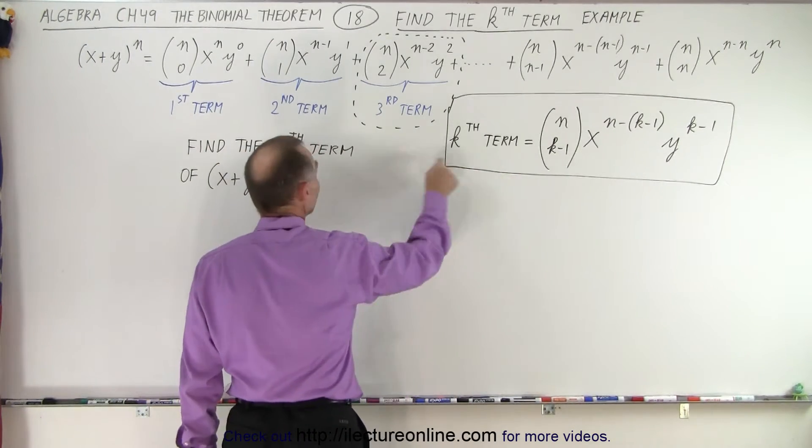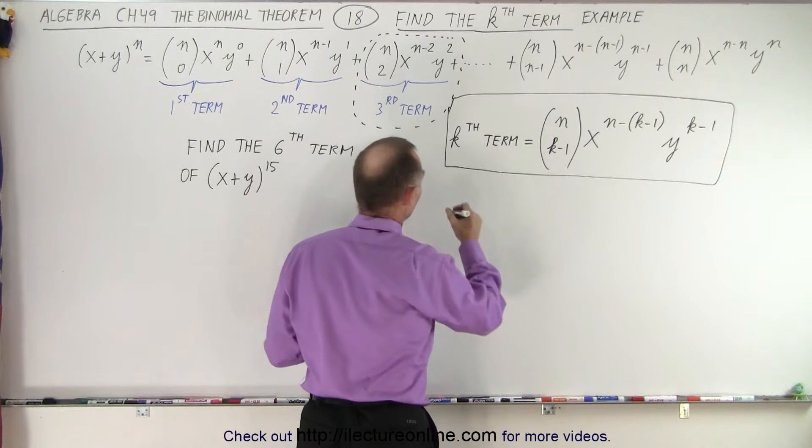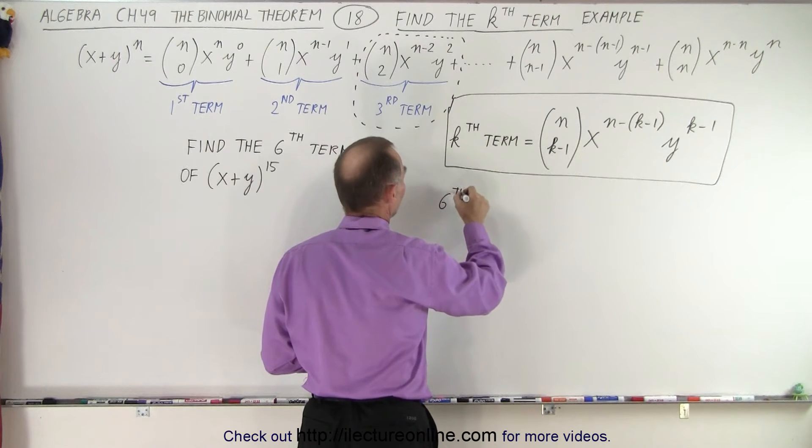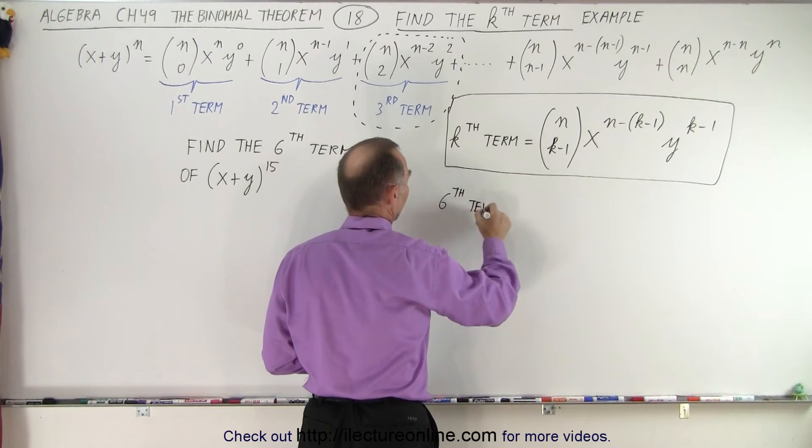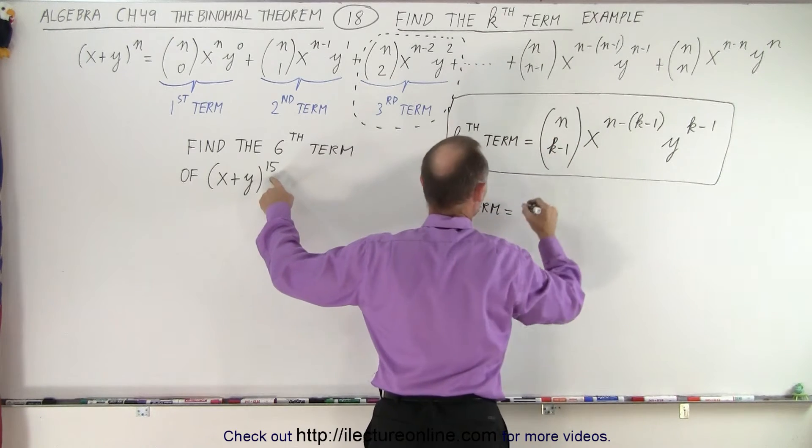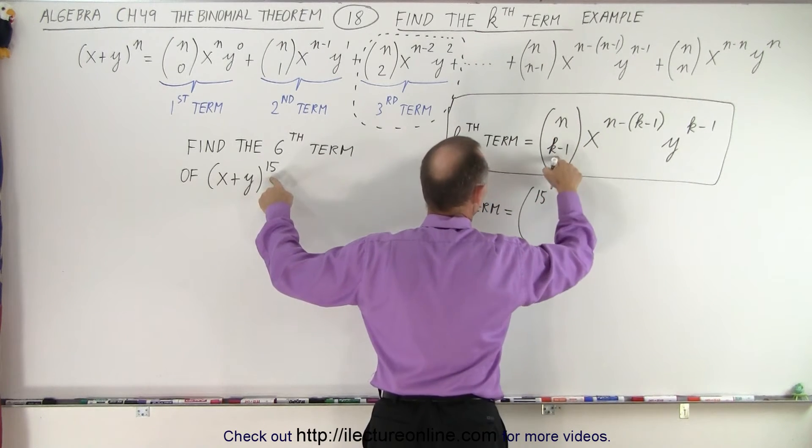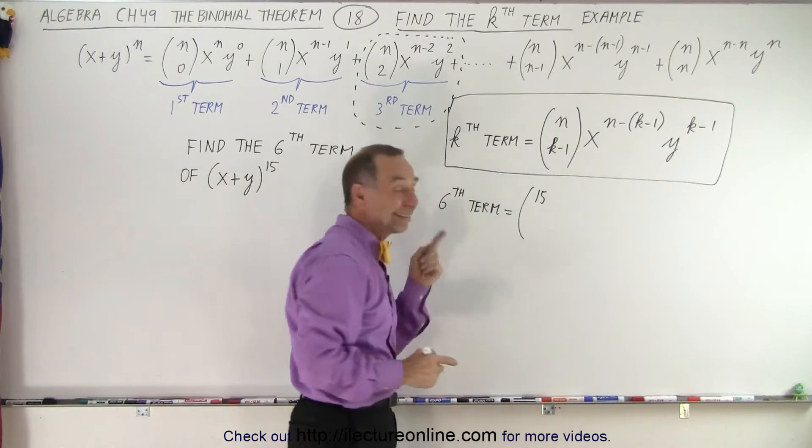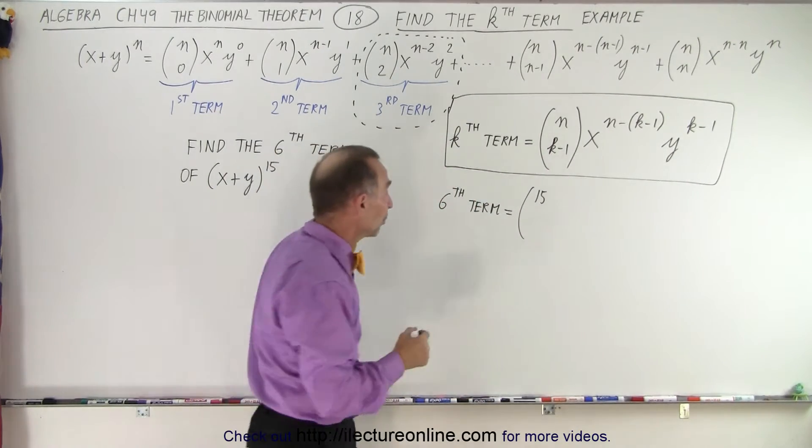So in this case, we're going to replace k by 6. And so the sixth term is equal to n, which in this case is 15. The number at the bottom would be k minus 1. In this case, k is 6, so 6 minus 1 would be 5.